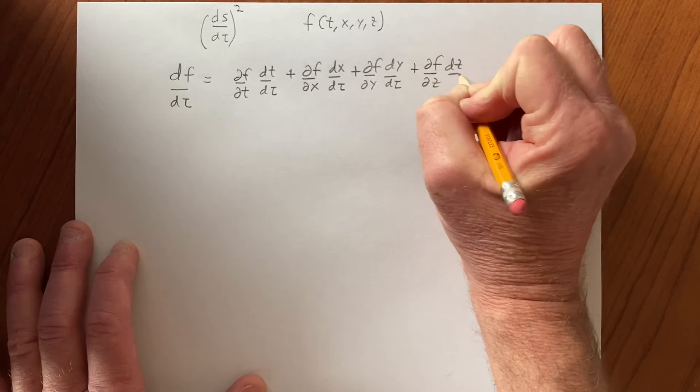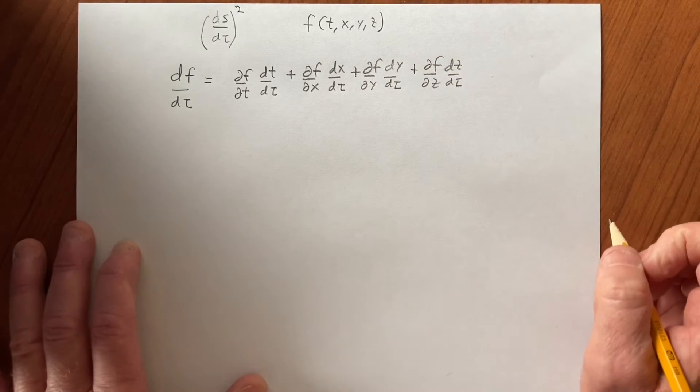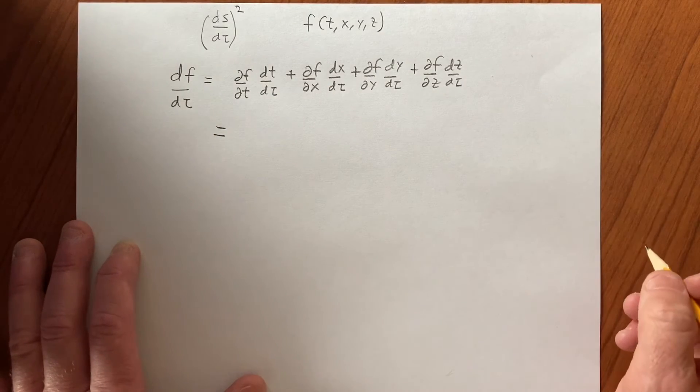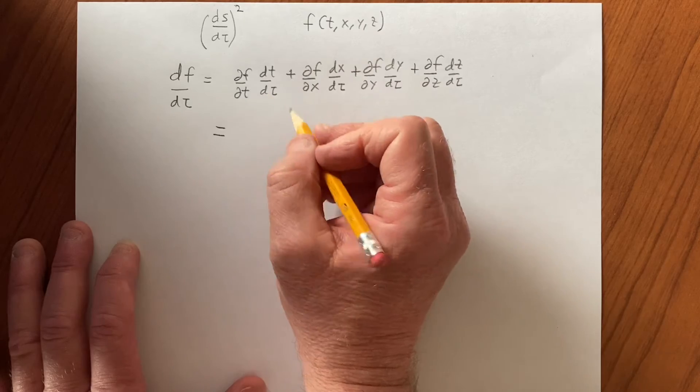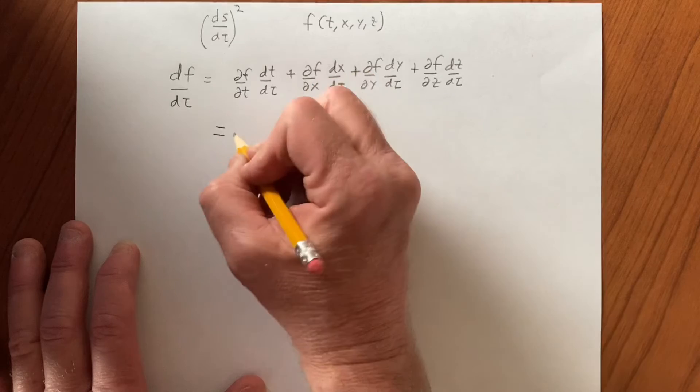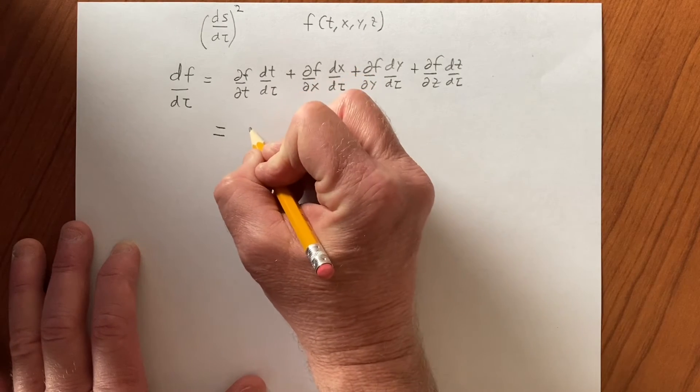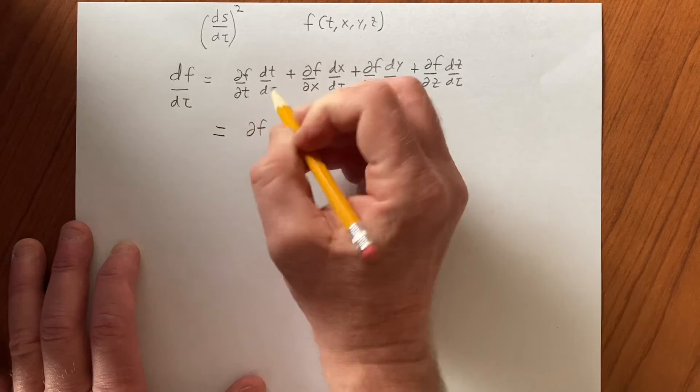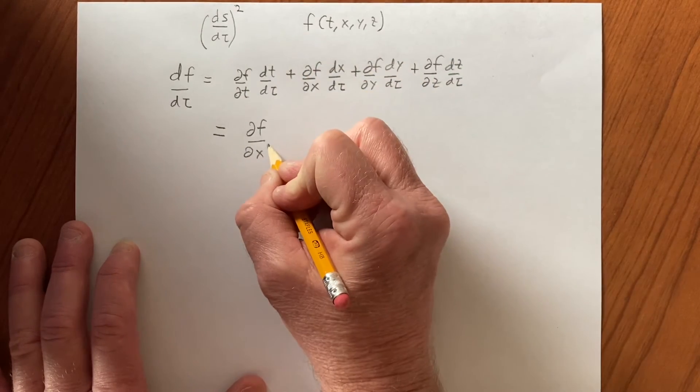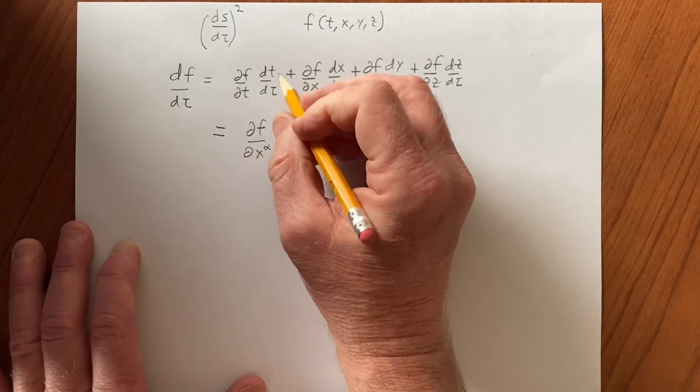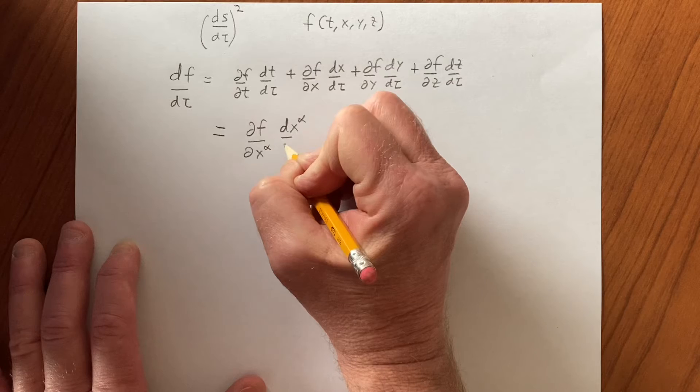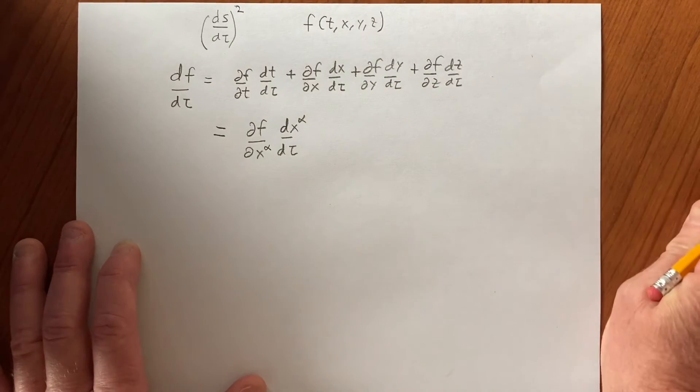And we can write this as the summation over the four space-time indices: df with respect to a coordinate x—in this case it's x⁰, but more generally x^α—and then dx^α with respect to the parameter, which in this case is proper time τ.